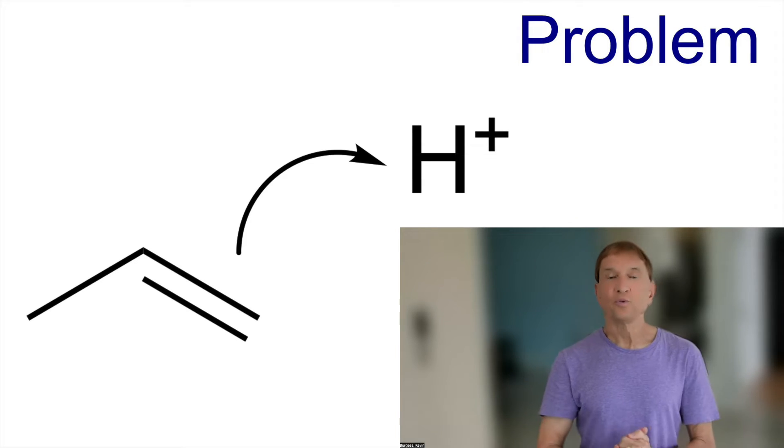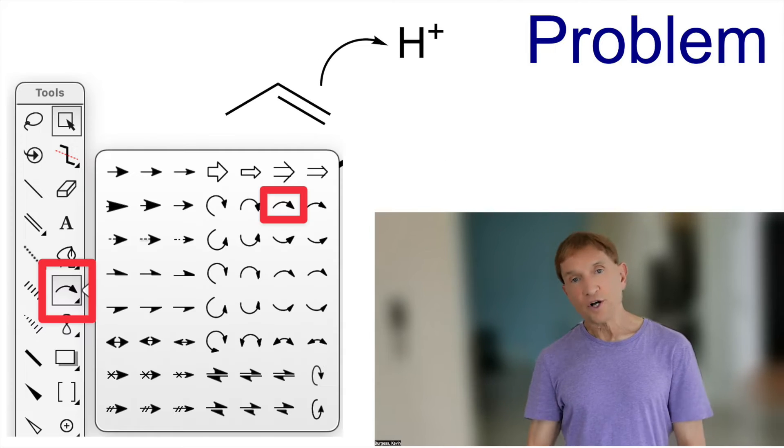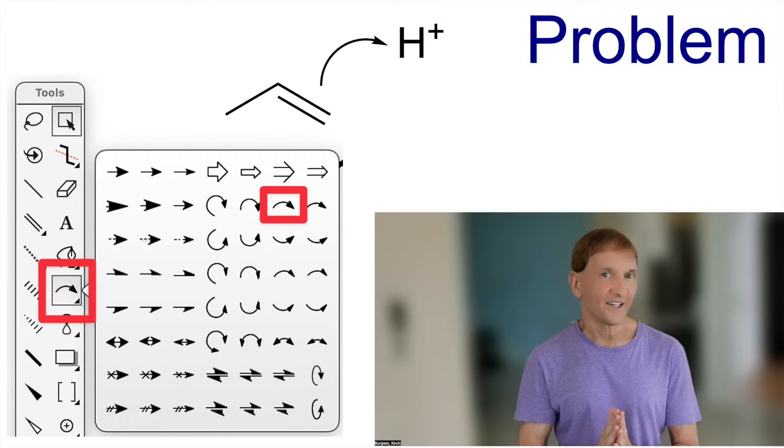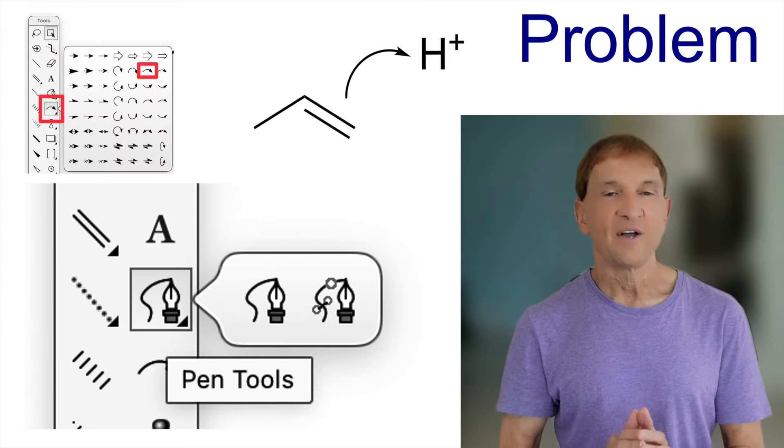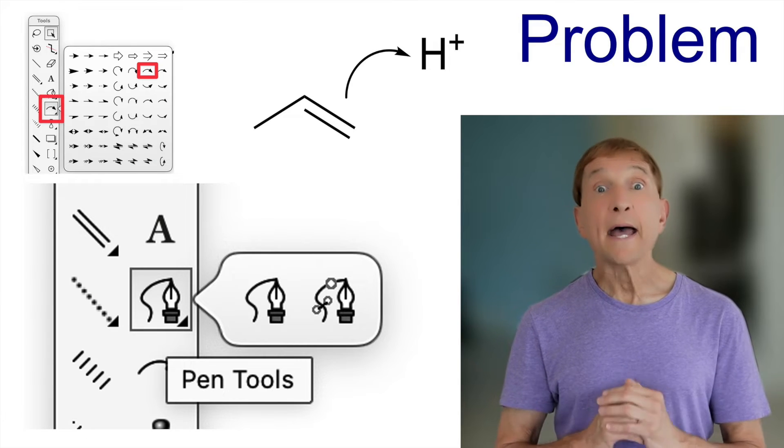Most people would draw an arrow like this. I can tell immediately that's been drawn using the curved arrow tool in ChemDraw. It works, it's not very pretty and it's hard to give the arrow any style. For that, you need the pen tool.